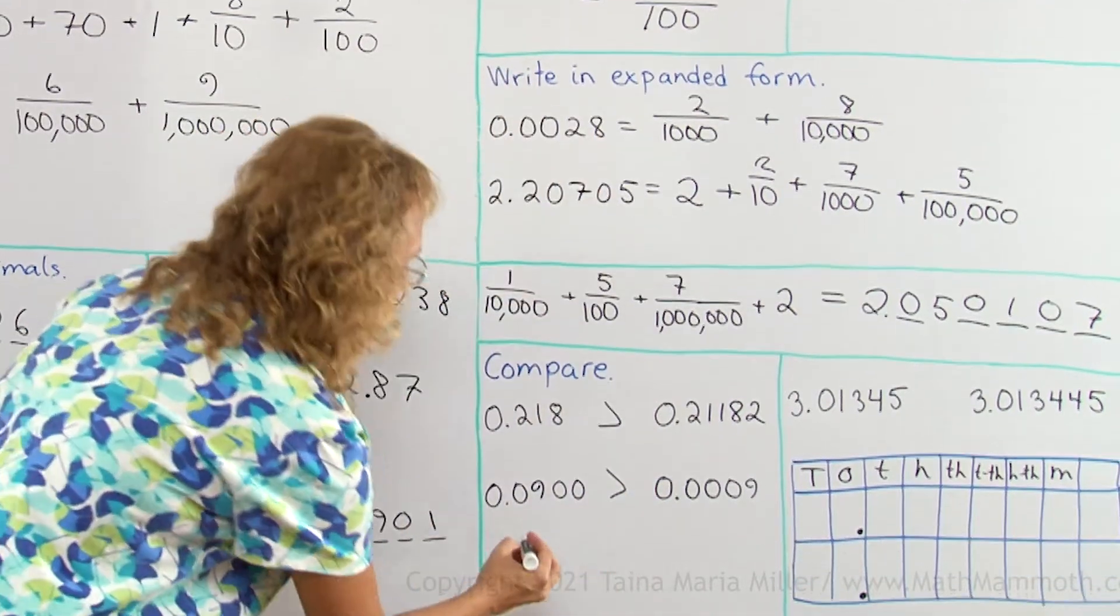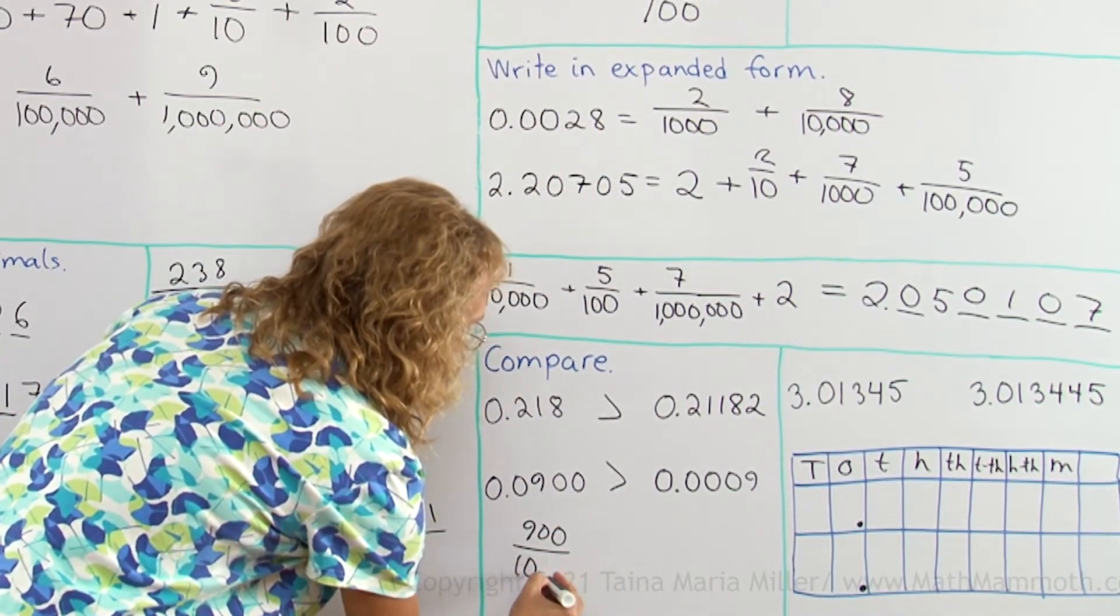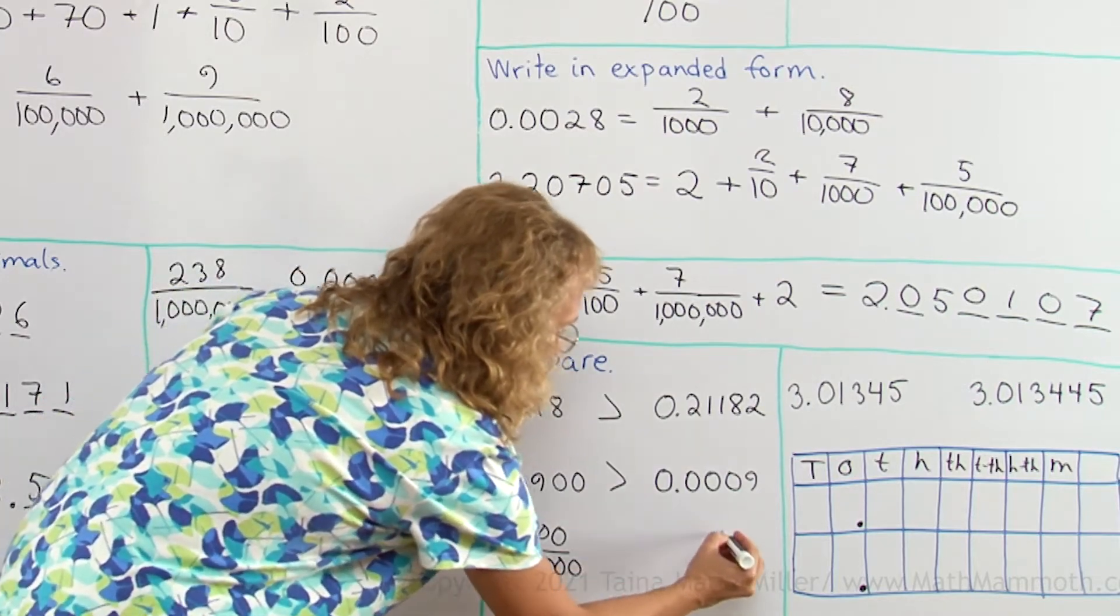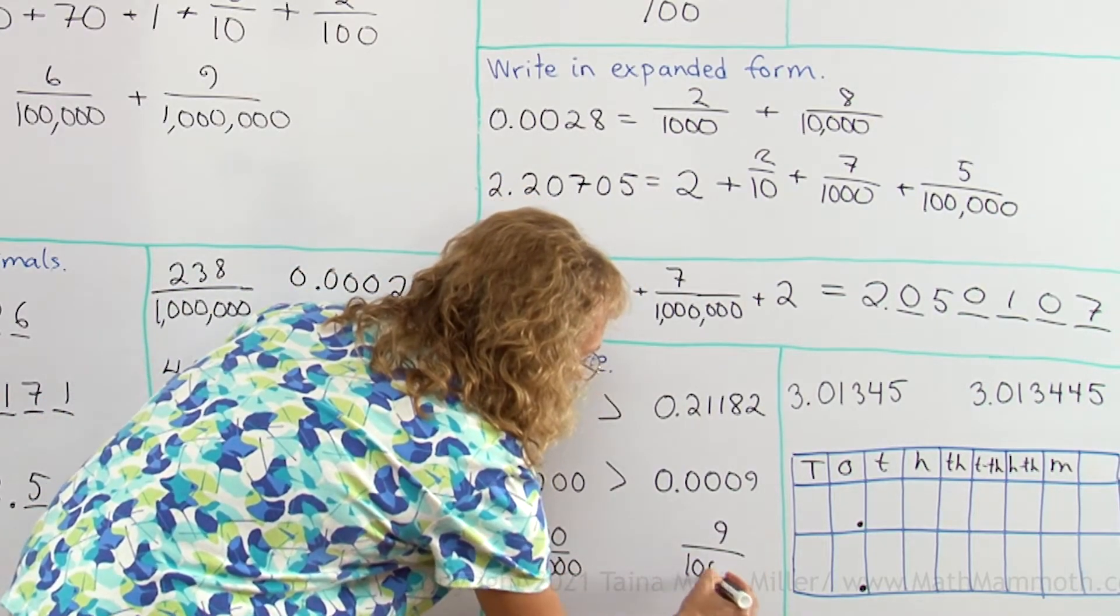Let me write these as fractions too. This one is nine hundred ten-thousandths. This one was just nine ten-thousandths.